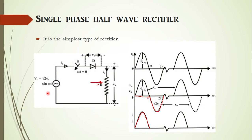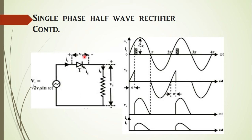So, to get a controlled output voltage, we use phase-control thyristors instead of diodes. As you can see in this slide, we replace the diode with a thyristor. We can control the output voltage of the thyristor rectifier by varying the delay or the firing angle.